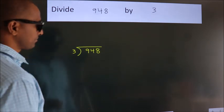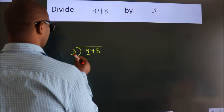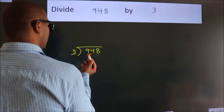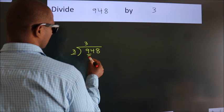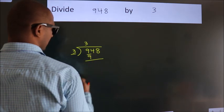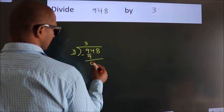Next. Here we have 9, here 3. When do we get 9? In 3 table, 3 times 3 is 9. Now we should subtract, we get 0.